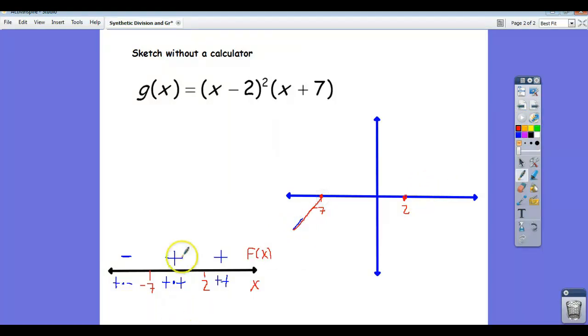And then it crosses and becomes positive in between negative 7 and 2. Now obviously, I've got to turn around and get to that 2 somehow. And I don't really know where I'm supposed to turn around, so for our purposes, it doesn't really matter, because I don't have enough information at this point. So just make it at some point turn around, go down, hit that 2. Now here's the interesting thing.